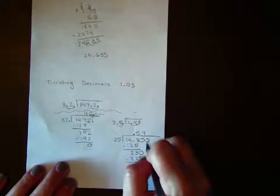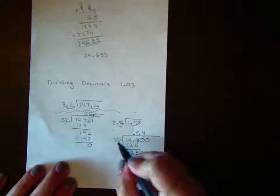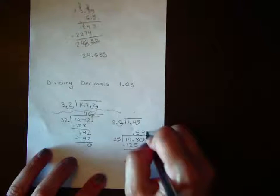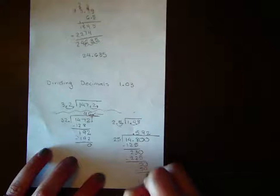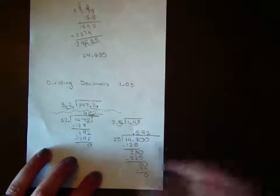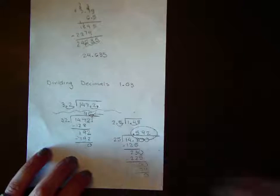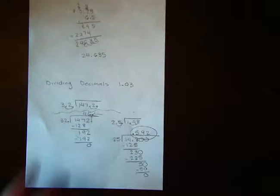Subtract 230 minus 225, we get 5. So I'm going to add another 0 to bring down. 25 goes into 50 two times. 2 times 25 is 50. And we're left with 0. So your answer is 0.592.